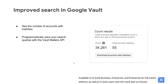We're also making it possible for admins to programmatically read, create, and delete saved search queries with the Vault Matters API. This will allow you to quickly and easily copy search parameters from one matter to another, saving you valuable time. For more info on how the count feature works, check out the help center.